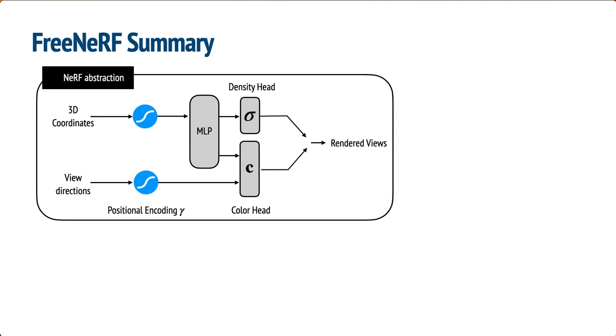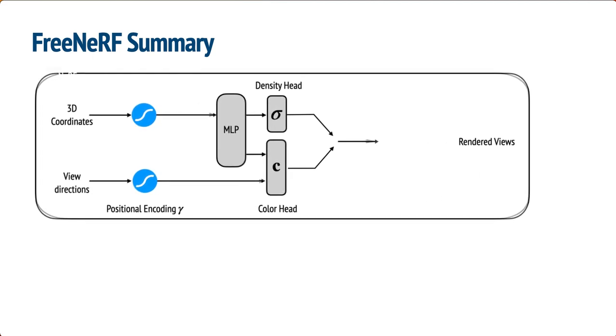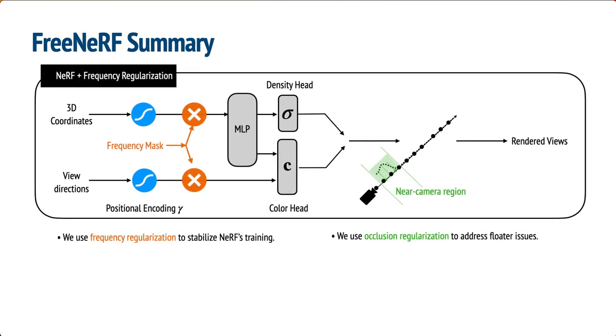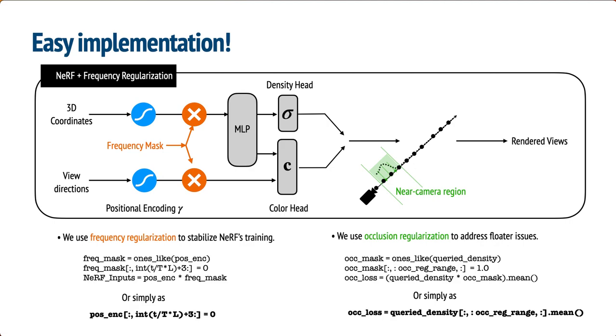To sum up, FreeNeRF augments plain NeRFs with two techniques. Both of them are training-only branches that come at no additional computational cost. We use frequency regularization to stabilize NeRF training and occlusion regularization to address floaters issues. They are easy to implement and trivial to compute.